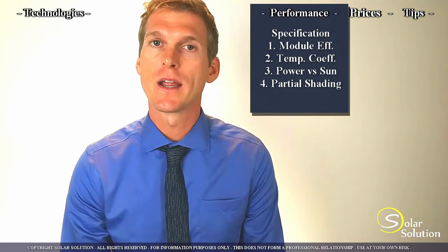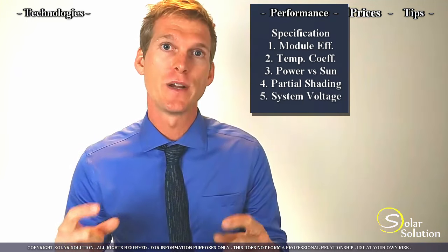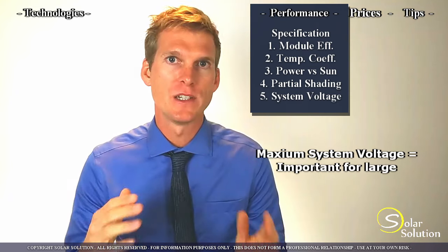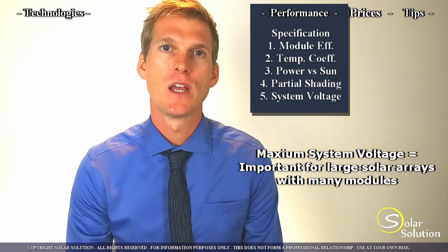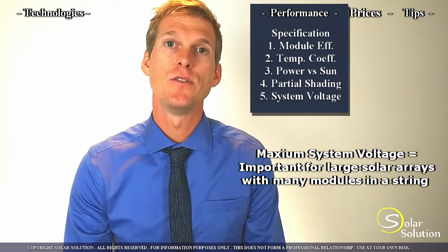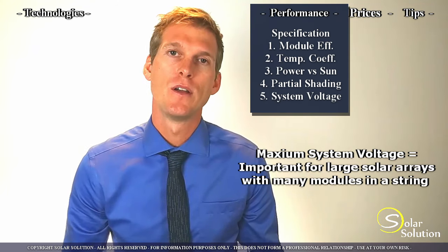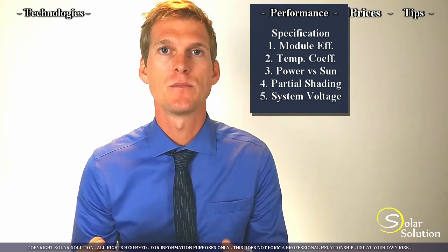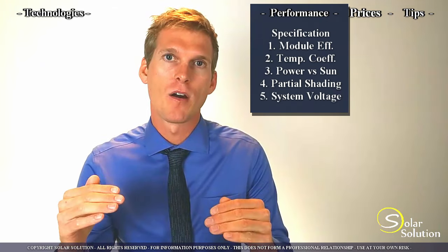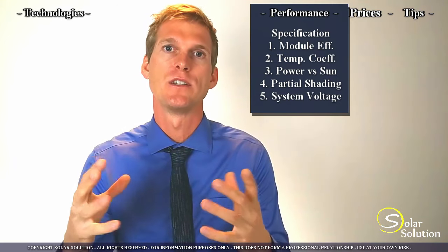So the last performance factor that you'll be looking at is the maximum system operating voltage or the maximum fuse rating of the panel. These values are indicated in volts and amps. Typical voltage range you can expect is between 600 and 1500 volts and the amp rating is between 10 and 20 amps. Now these values are typically only important for you when you go to larger off-grid solar energy systems, say over 5 or 10 kilowatt peak. But typically the higher they are, the more flexibility you have in your design.